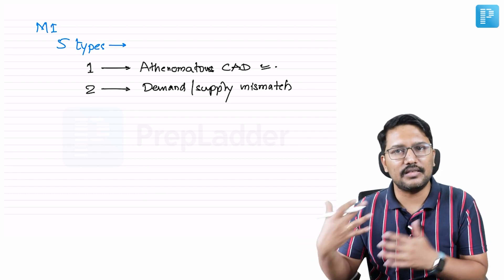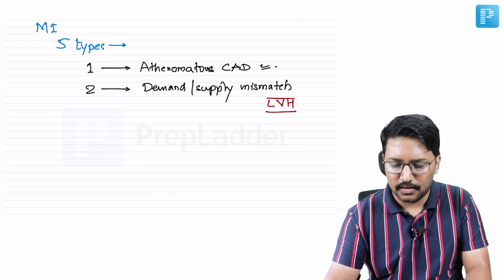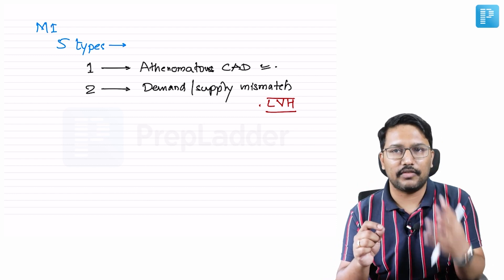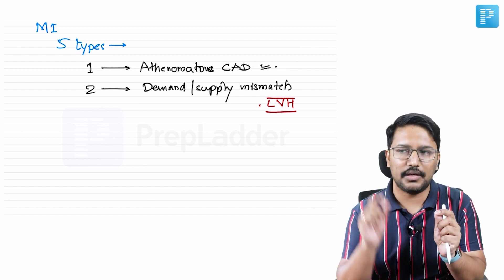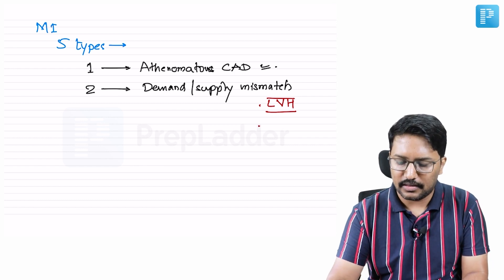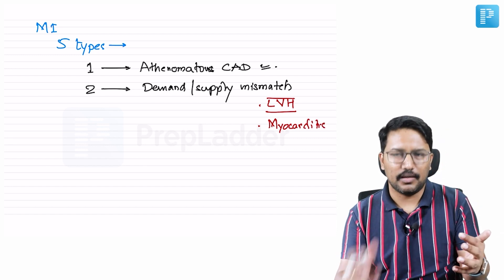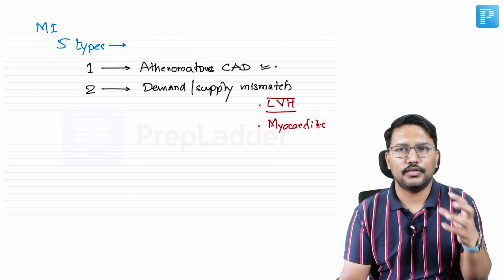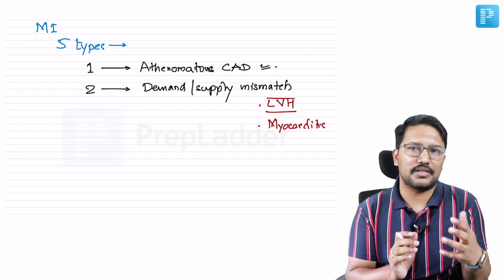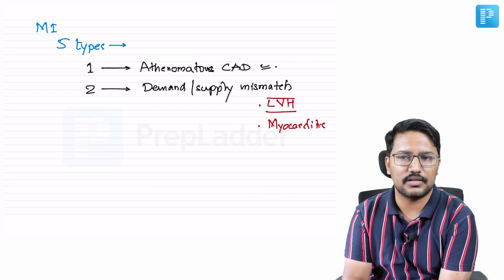The first example of Type 2 that comes to mind is left ventricular hypertrophy. In LVH there is increased demand; the coronaries may be normal without atheromatous plaque, yet myocardial infarction can develop because the increased demand is not met by supply. Another example is myocarditis — in myocarditis there is tachycardia, myocardial cells are dysfunctional, and tachycardia demands more blood supply which normal coronaries cannot match. Post-infectious MIs, particularly COVID-related, may be related to this myocarditis mechanism, making them Type 2.